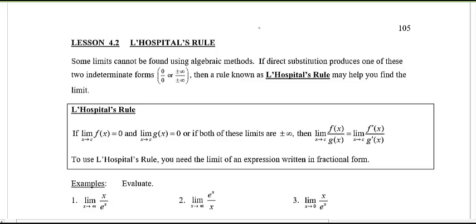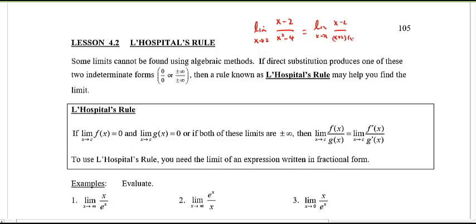Remember those limits we had before? The limit as x approached 2 — we couldn't solve it directly because you get 0 over 0. There were some algebraic means we used — we had to factor: x plus 2, x minus 2 — some algebraic manipulation, and then you solve.